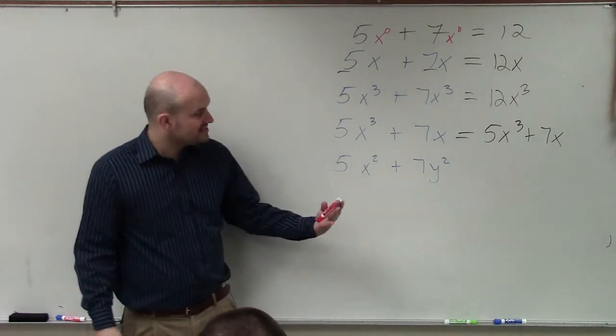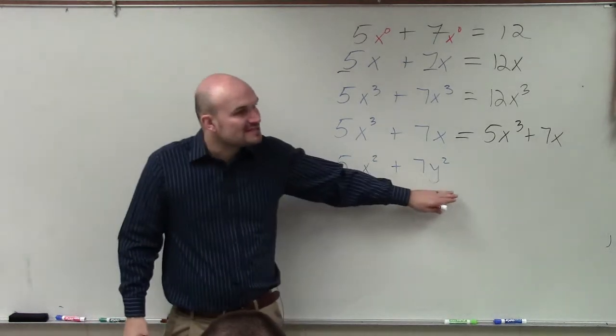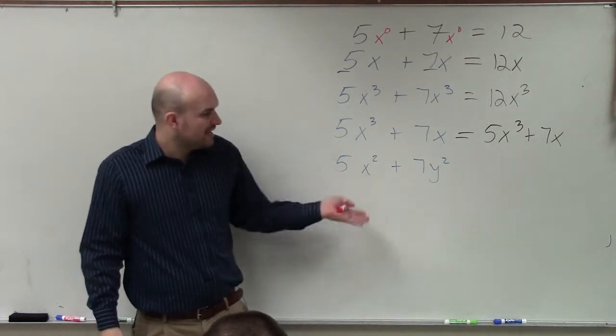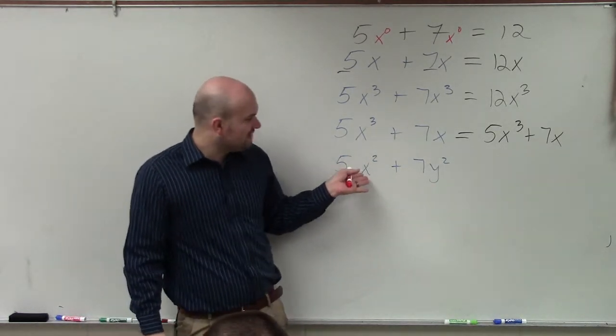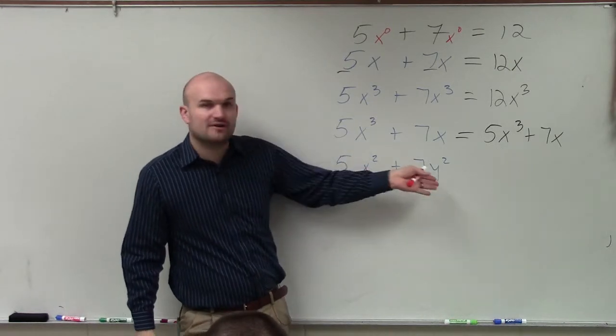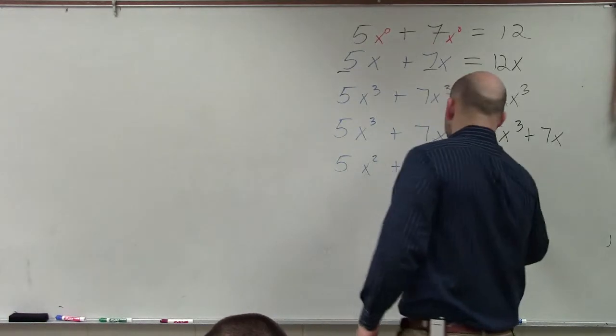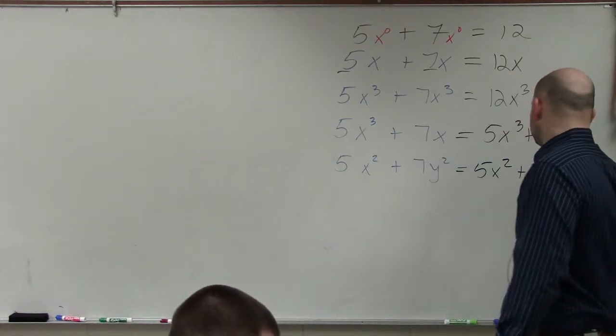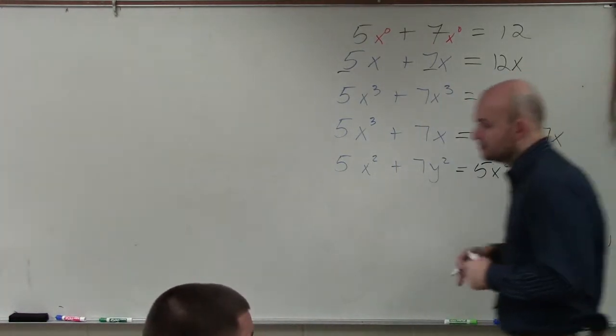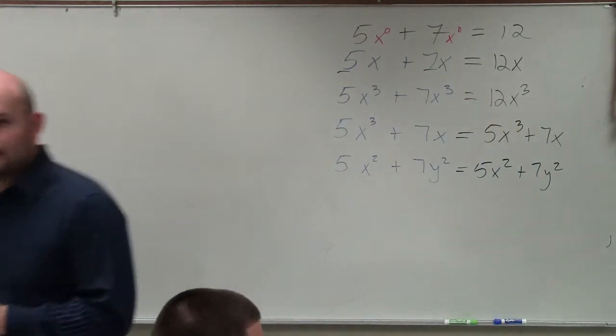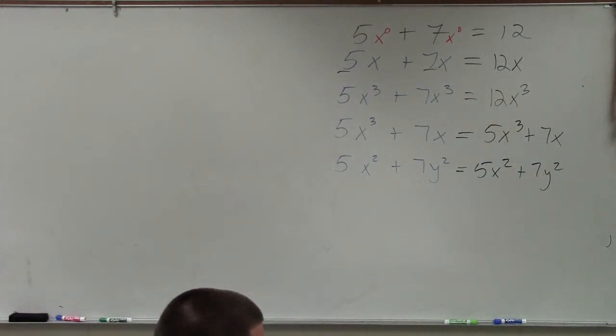The other case that you're going to come across is when you're going to have different variables. Well, again, the variable factors for x squared is x times x. And the variable factors for y squared is y times y. So you cannot combine those to a single term either. You just leave them as they are. Does that make sense? Anybody have any questions?